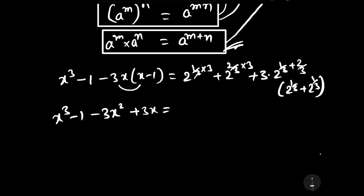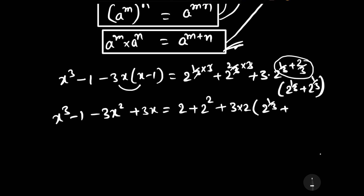Now cancelling: 2 to the power (1/3 × 3) equals 2, and 2 to the power (2/3 × 3) equals 4. Adding 1/3 plus 2/3 gives 1, so 2 to the power 1/3 times 2 to the power 2/3 equals 2 to the power 1. That gives 3 times 2, equal to 6. And the remaining term is 2 to the power 1/3 plus 2 to the power 2/3.